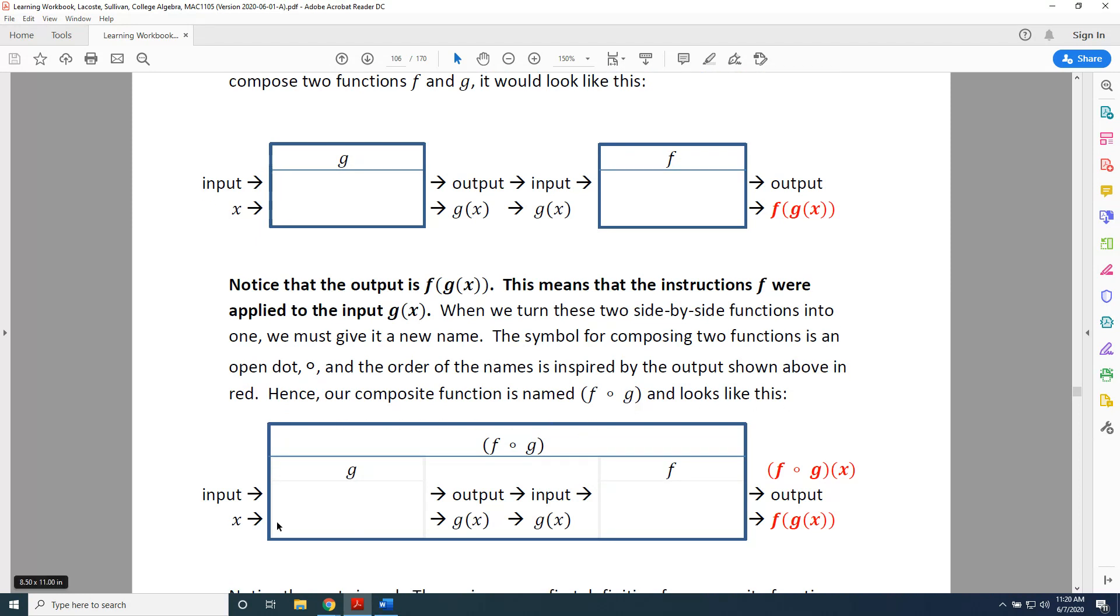Notice now that we have one large blue box that is sitting on top of the individual blue boxes from the previous diagram. This indicates that we have now turned these two functions into just one function named f composed with g.